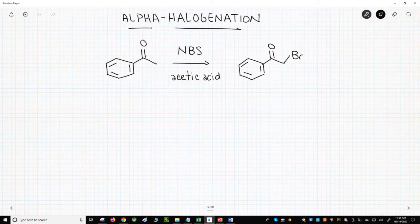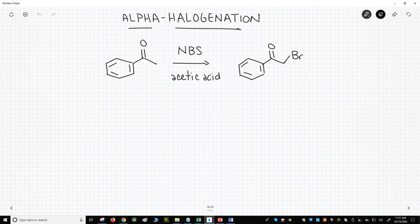Alright, on this slide is a reaction. In this reaction, the carbon alpha to the carbonyl has gained a halogen atom. In this case, it's a bromine, and this is an alpha-bromination.